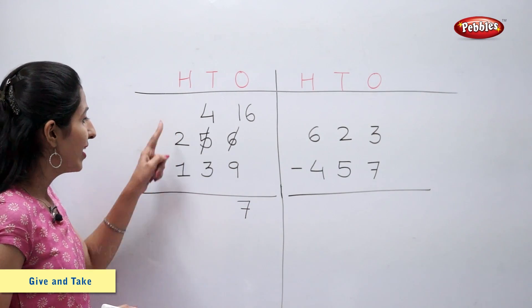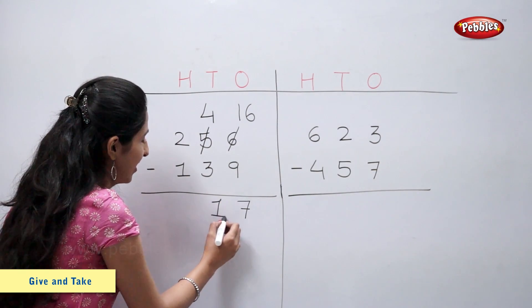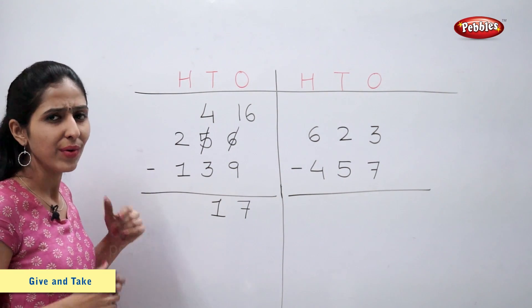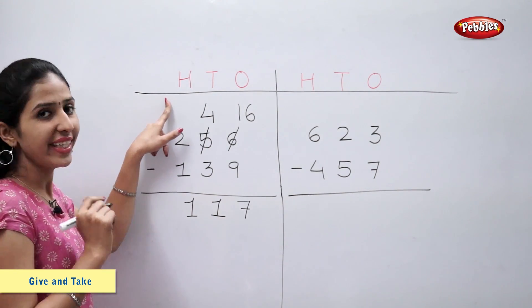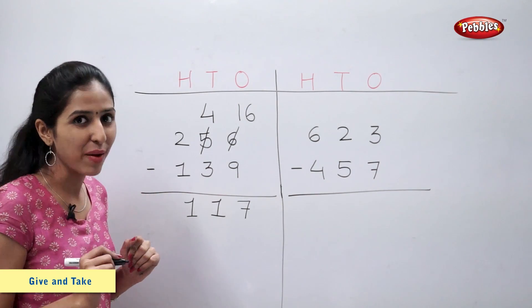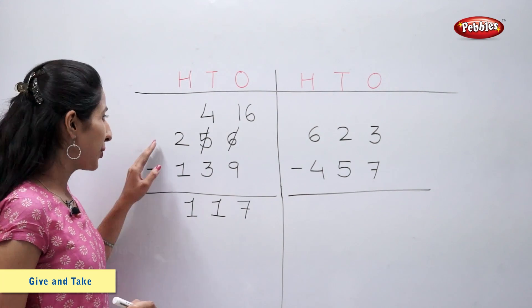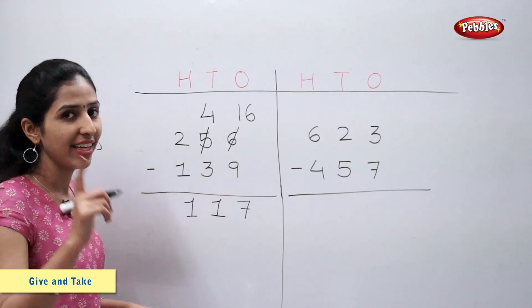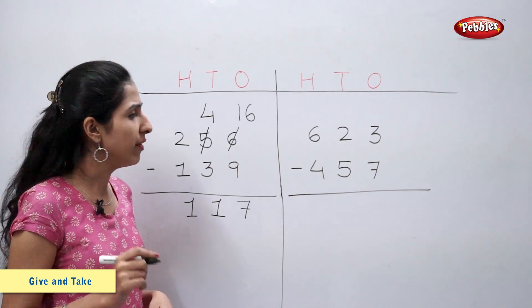Four minus three is equal to one. Two minus one is equal to one. So now we have one hundred, one ten, and seven ones. So the number is one hundred and seventeen. So two hundred and fifty-six minus one hundred and thirty-nine is equal to one hundred and seventeen. Let's solve this example.